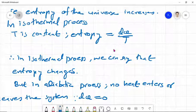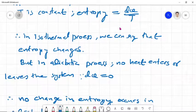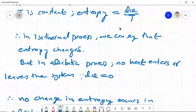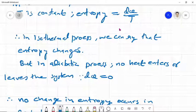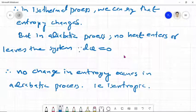But in the case of adiabatic process, no heat enters or leaves the system. Therefore DQ is equal to zero. Since no change in entropy occurs in adiabatic process, it is also named isentropic.